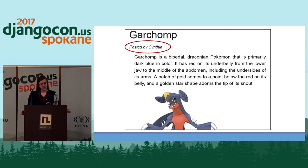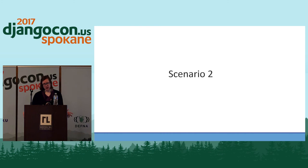Going back to our example app, we can now see that in our blog post, we display the user's real name instead of their username. We can see exactly who posted and we don't have to worry about embarrassing usernames. Obviously the proxy model, although useful and easy to set up, can be pretty limited since we're not actually changing the database at all.